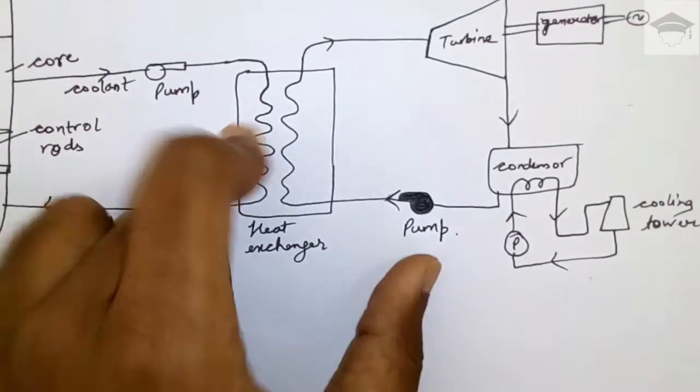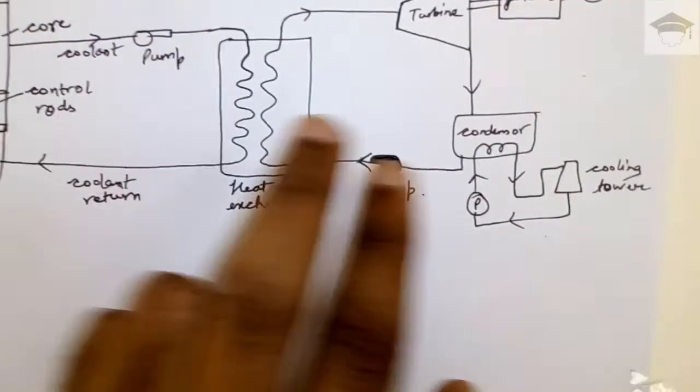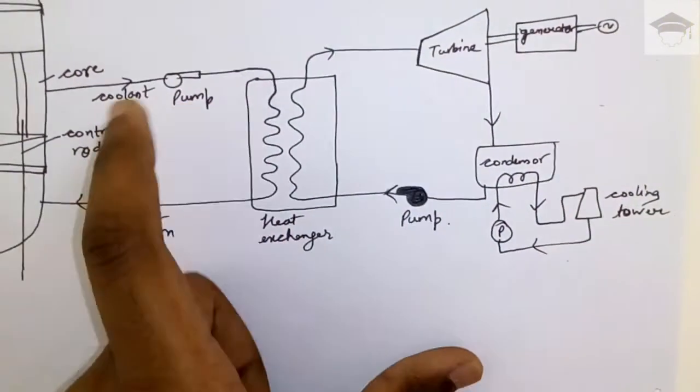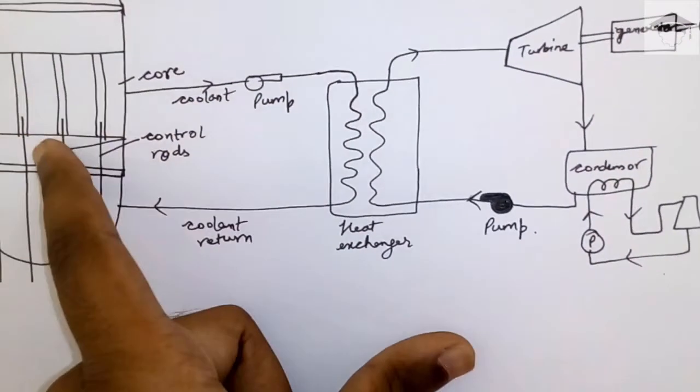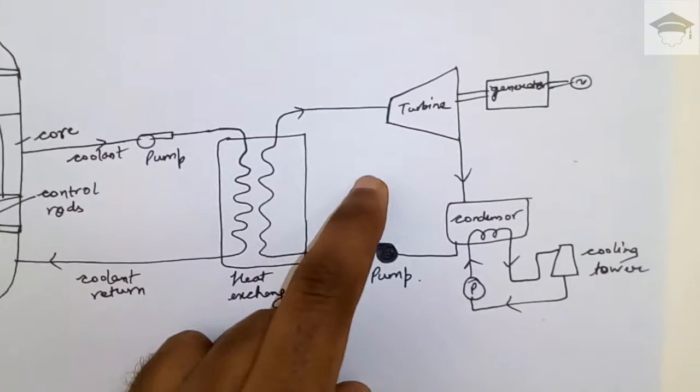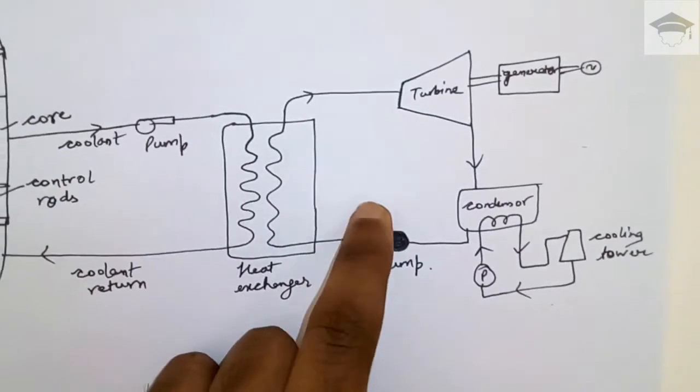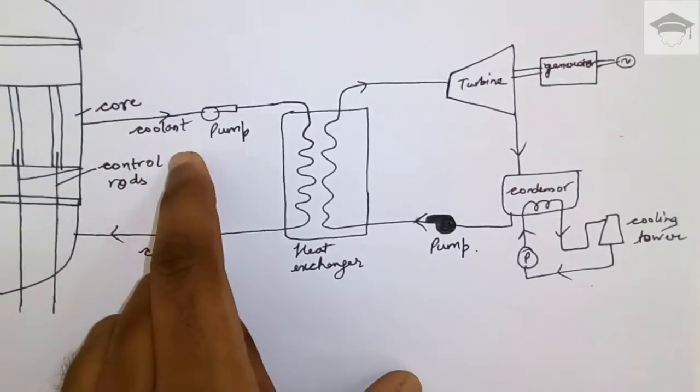This is the primary circuit. This is the secondary circuit. The heat possessed in the reactor is taken by the coolant, and this coolant further transfers the heat to the secondary liquid. Now here, the secondary liquid is water. It takes the heat from the coolant. Here, the water takes the heat from the coolant in the heat exchanger.